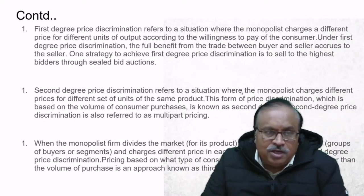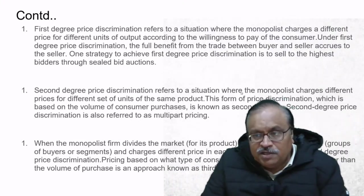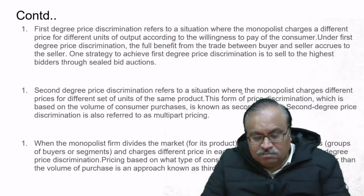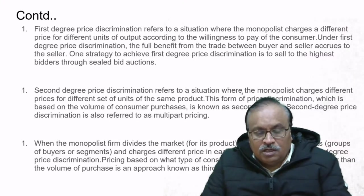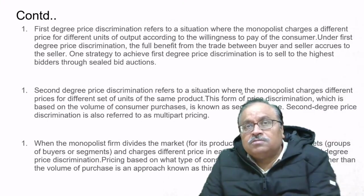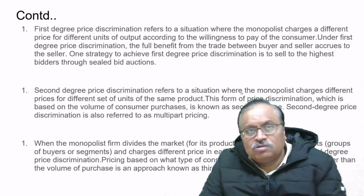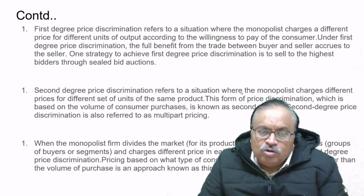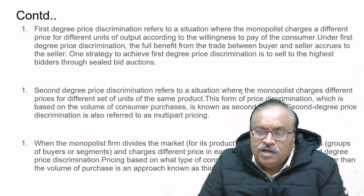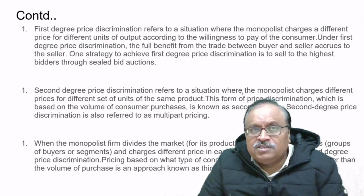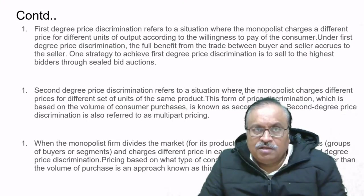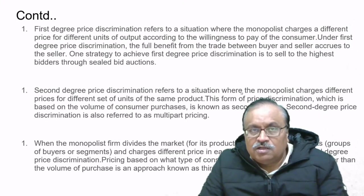Second-degree price discrimination is also referred to as multi-part pricing. If one buys one soap, there is one price; if one buys five, a different price; if one buys a hundred (as a retailer), yet another price. When the monopolist divides the market for its product into two or more groups of buyers and charges a different price to each group, it is known as third-degree price discrimination.